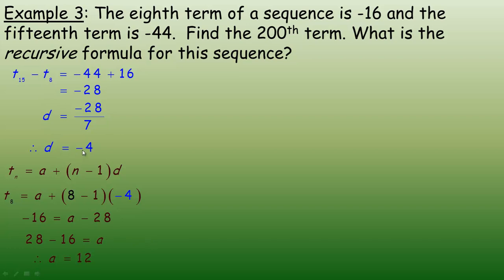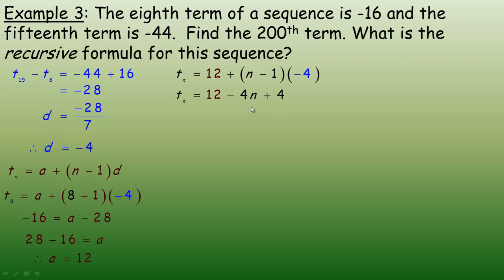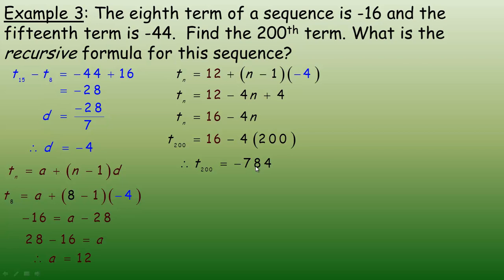Now that a equals 12 and d equals negative 4, we can find the 200th term. The nth term equals 12 plus (n minus 1) times negative 4. Distributing the negative 4 gives negative 4n plus 4, and 12 plus 4 equals 16. So the general term is 16 minus 4n. To find term 200, we put 200 in place of n: 16 minus 800 gives negative 784 for the 200th term.